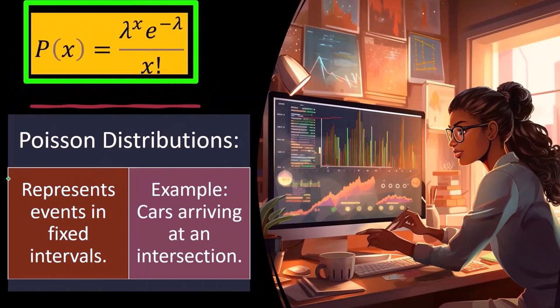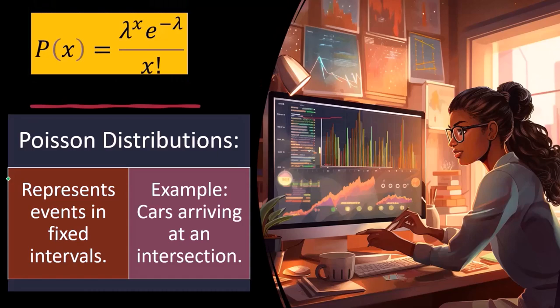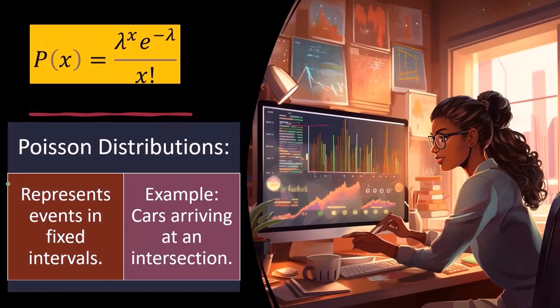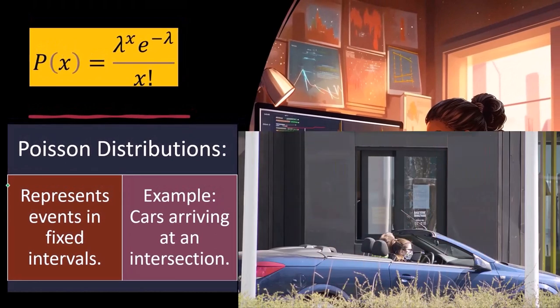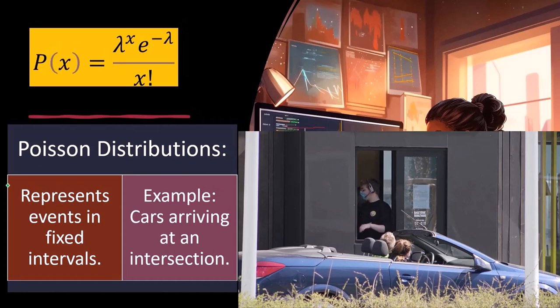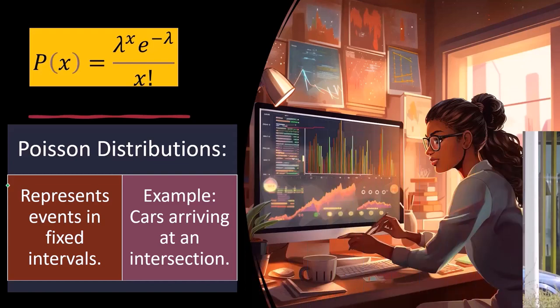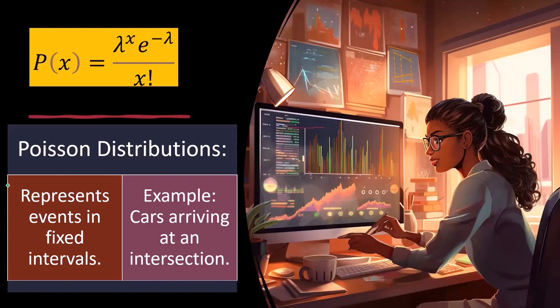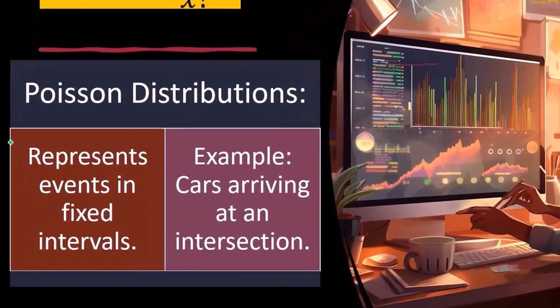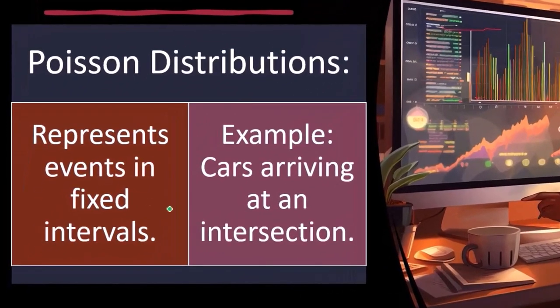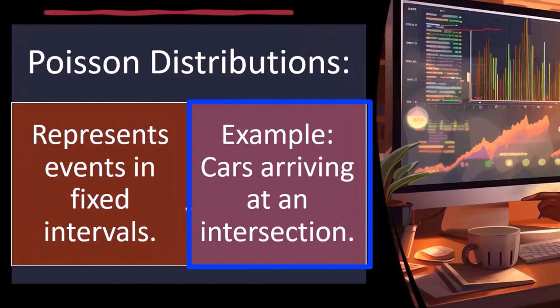And it has been noticed that in business scenarios, a lot of times when you have these line waiting situations, you're waiting in line at the drive-through or at a roller coaster or cars arriving at an intersection, that they seem to follow this Poisson distribution.